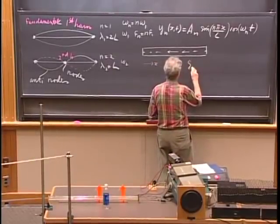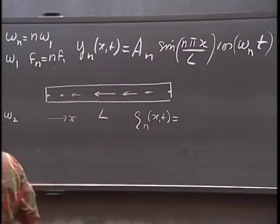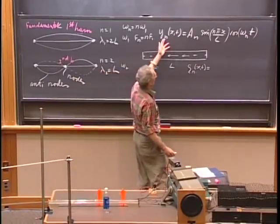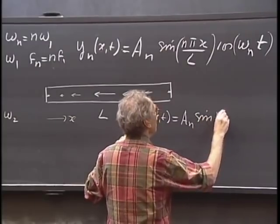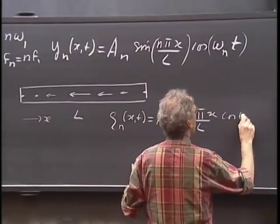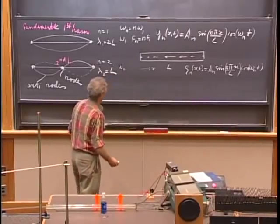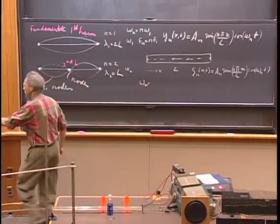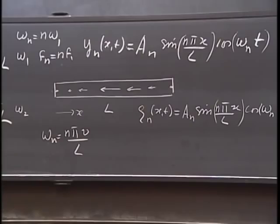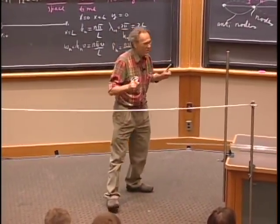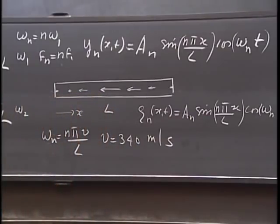The equation for ξₙ(x,t) is effectively the same as y: ξₙ = Aₙ · sin(nπx/L) · cos(ωₙt). Here ωₙ = nπV/L, but now V is the speed of sound — approximately 300 m/s — and you're stuck with that. This has major consequences for the design of wind instruments: with string instruments you can manipulate V by changing tension and μ, but with wind instruments the only thing you can play with is L.